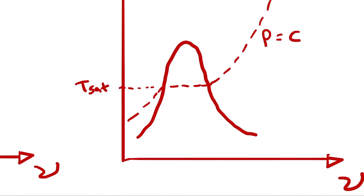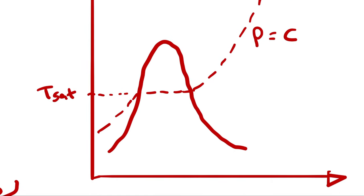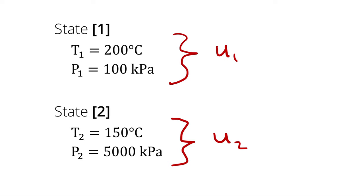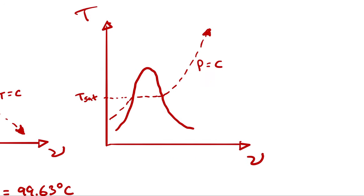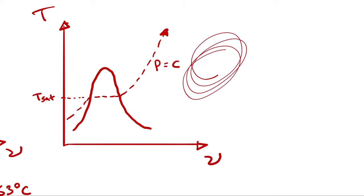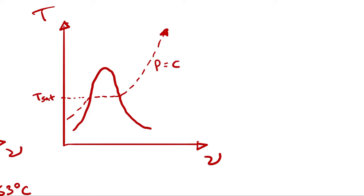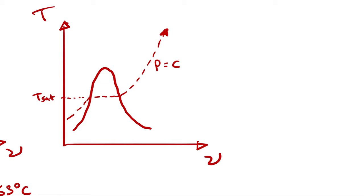The saturation temperature corresponding to P1 is 99.63 degrees Celsius. My temperature at state 1 — 200 degrees Celsius — is higher than that. Therefore, I have to be in the superheated vapor region, because the part of that line of constant pressure that is above the saturation temperature is in the superheated vapor region. So T1 is greater than T_sat at P1, therefore we have a superheated vapor.